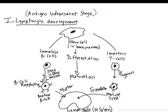B cell receptors are Y-shaped structures — either IgD or IgM antibodies stuck to the surface. IgD antibodies mostly stay attached to the cell surface and are not secreted, while IgM will be secreted. These Y-shaped structures are far too small to be seen under a microscope — this diagram is not drawn to scale. They are shown here just to illustrate that the cells now have their receptors.